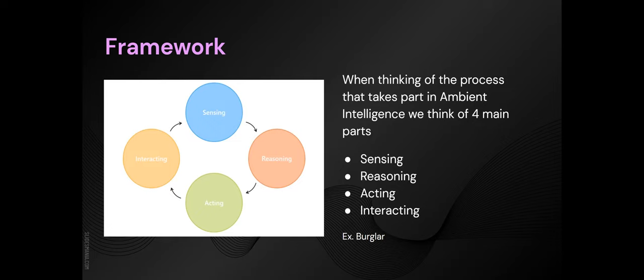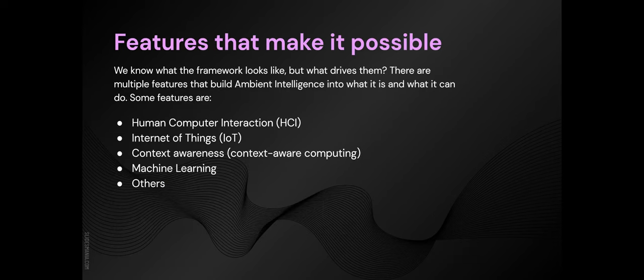Even though they all tend to happen, some parts are more important than others — specifically sensing, reasoning, and acting are a bit more visible. There are a few features that encompass ambient intelligence. The four most general ones would be human-computer interaction (HCI), Internet of Things (IoT), context-aware computing, and machine learning. There are a few others but I want to stick to these four core ones.